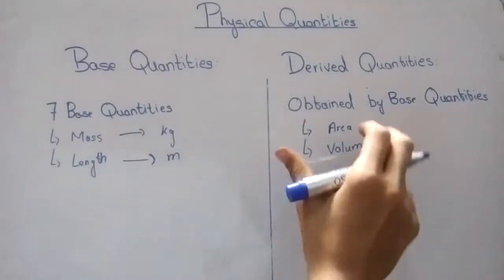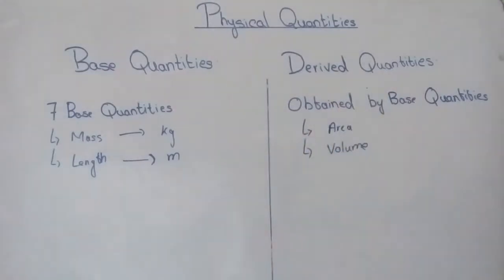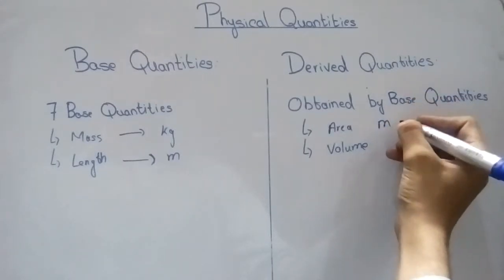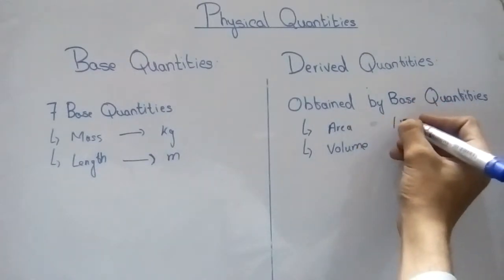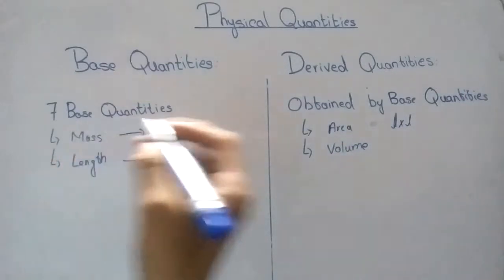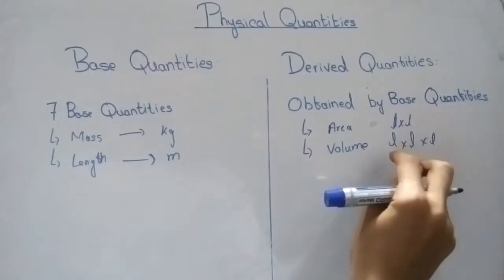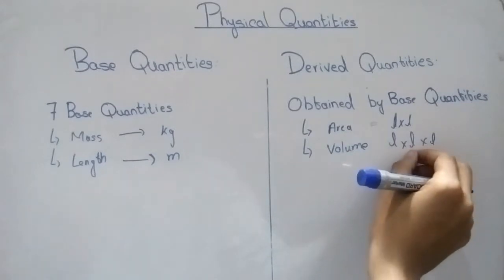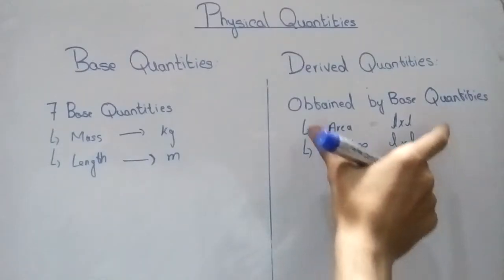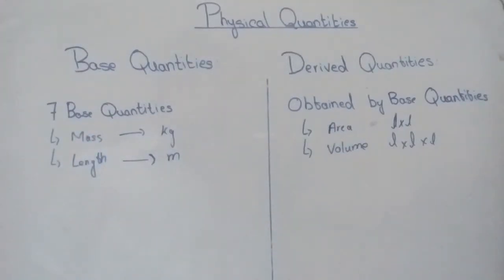Area is a derived quantity because we obtain it by multiplying length two times: L multiplied by L equals area. Volume is L multiplied by L multiplied by L. Here, L is a base quantity multiplied by itself, so this becomes a derived quantity. Area and volume are both derived from length, which is why we call them derived quantities.